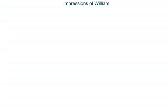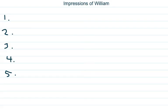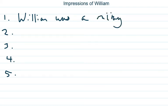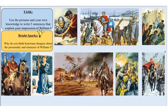All right, so we should have now unpaused the video and hopefully you've all had a go at writing down five sentences which could summarise William the Conqueror based on those pictures and your own knowledge. My first one was: William was a military man. And you can see William was obviously very heavily involved personally in the military.